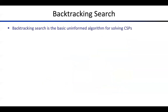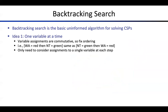Backtracking is extremely simple — we already learned it in DFS and BFS. We check one node, and if it fails the goal test, we return to the parent node. The addition here is that we also check constraints as we go — not only testing the goal but also satisfying constraints. That's the difference from uninformed or informed search.